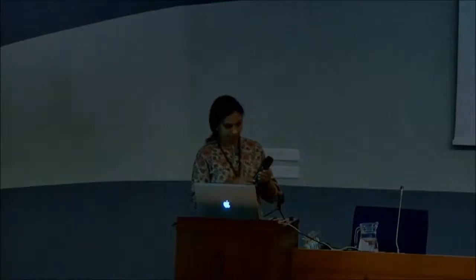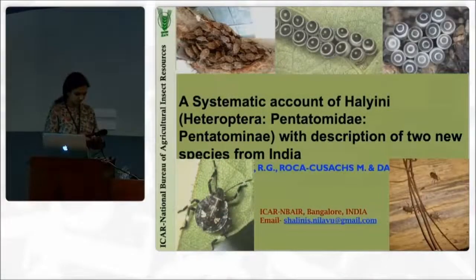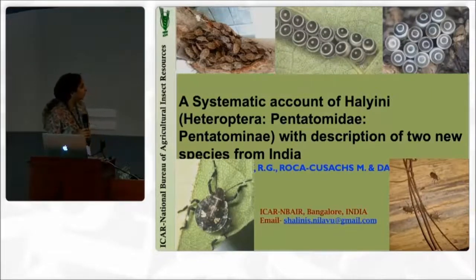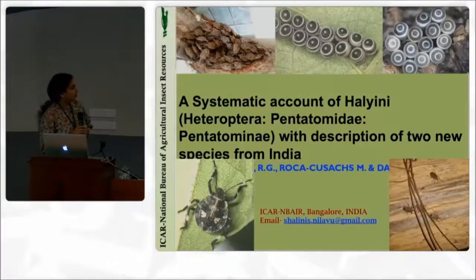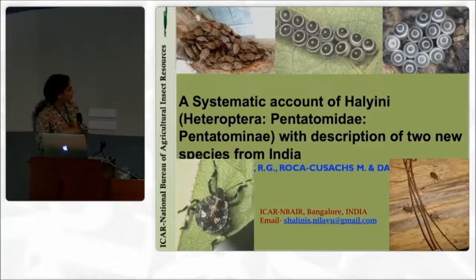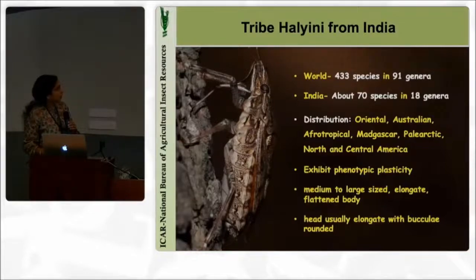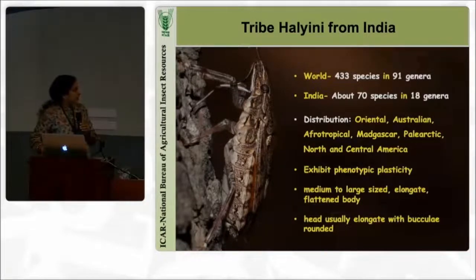I'm dealing with the systematic account of Halini, one of the problematic groups of Pentatomidae, from India — the fauna of India — with the description of two new species. Around 433 species are reported from the world under 91 genera; of these only 70 species in 18 genera are reported from India. The distribution is globally distributed. The major problem with this group is the phenotypic plasticity — it shows lots of variation in various external morphological characters.